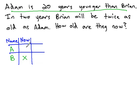If we want to show that Adam is 20 years younger, we need to subtract off 20 years from Adam's age. Subtracting 20 years from Brian, who is x right now, we can represent Adam with x minus 20 right now.